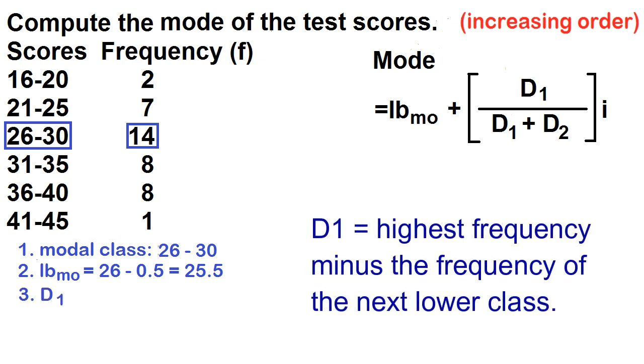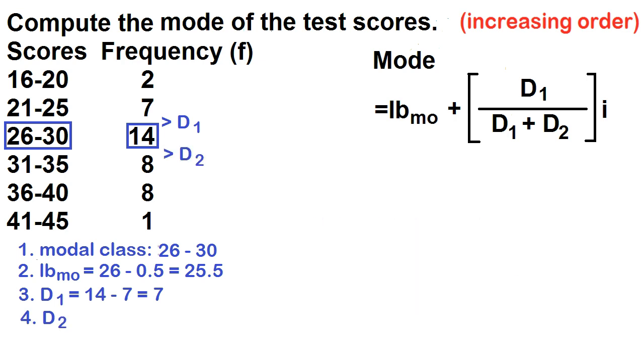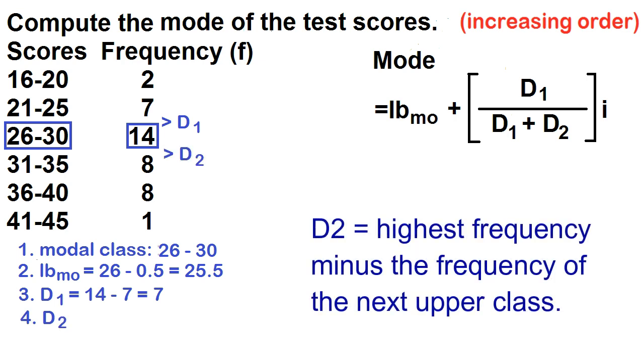d sub 1 is the highest frequency minus the frequency of the next lower class. 14 minus 7 is equal to 7. d sub 2 is the highest frequency minus the frequency of the next upper class. 14 minus 8 is equal to 6.